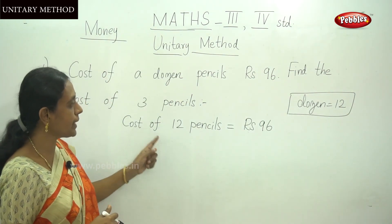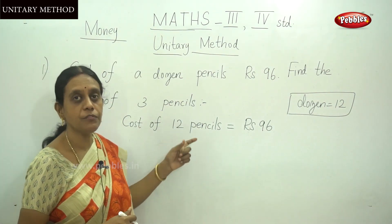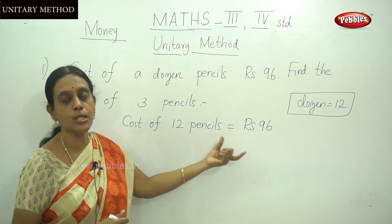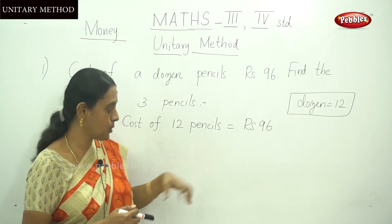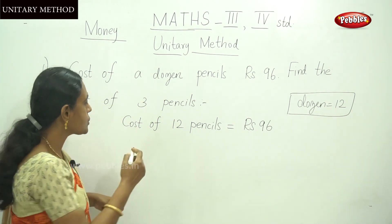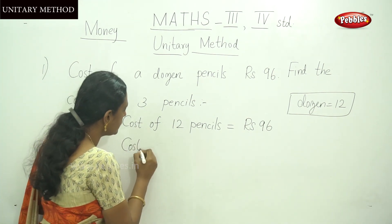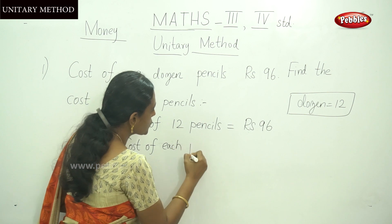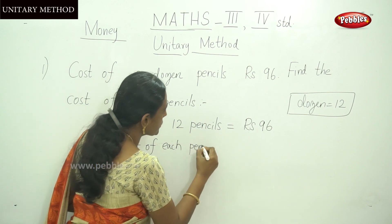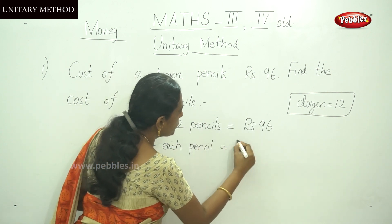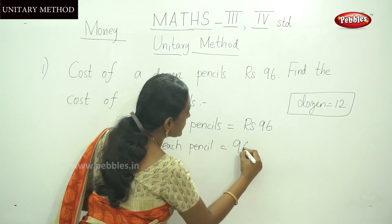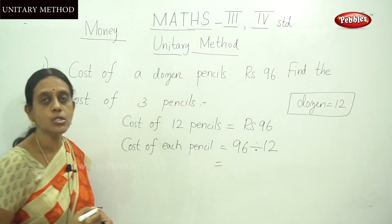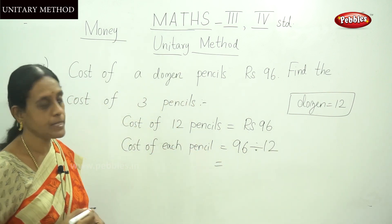We have to find the cost of each pencil. Since the cost of 12 pencils is 96, the cost of each pencil equals 96 divided by 12.